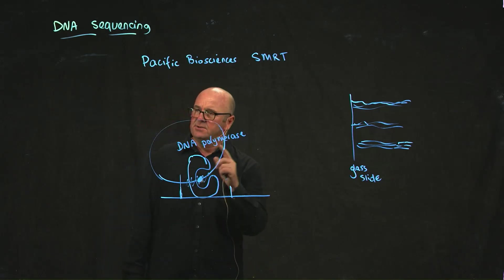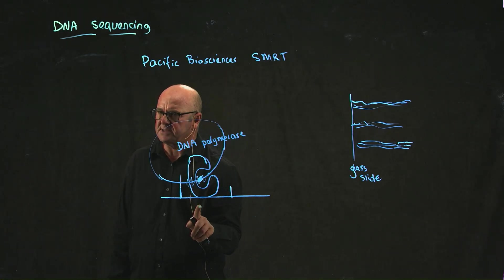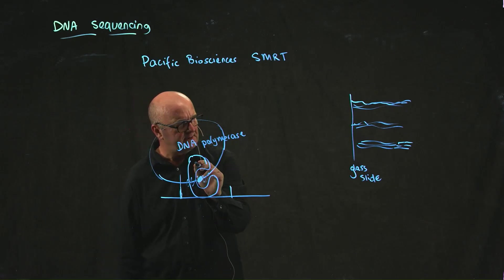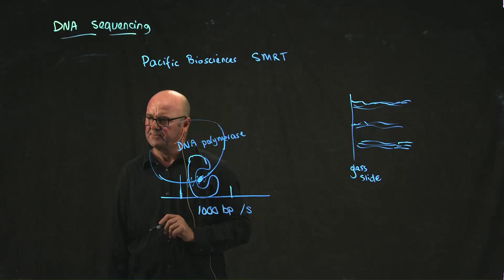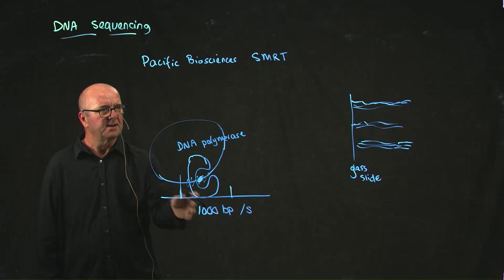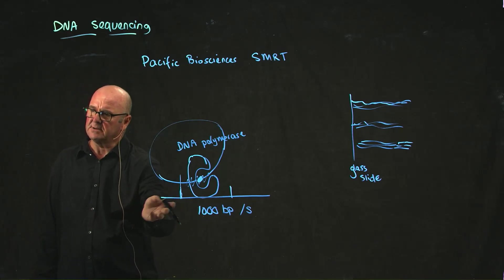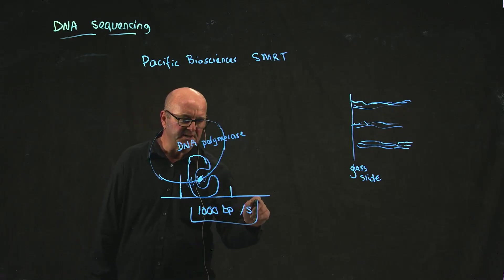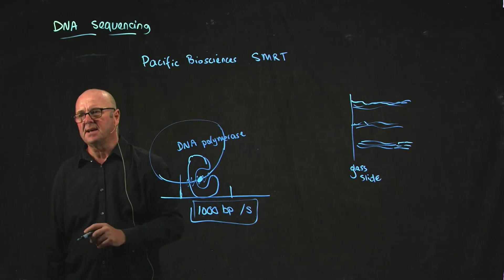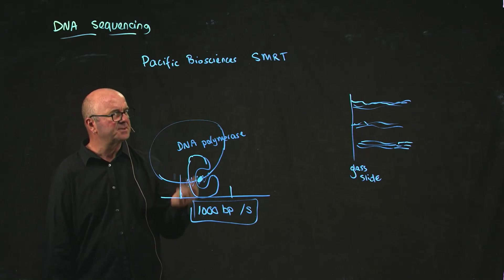And so you can see which base is added. The problem with Pacific Biosciences sequencing is that this enzyme can add about 1,000 base pairs per second - that's how processive DNA polymerase is. When our cells replicate, it's doing it at about this speed. When bacteria replicate, it can do it at that speed. We don't have technology that can capture information at this rate, and so one of the problems is they can't actually capture all of the information that's being generated.